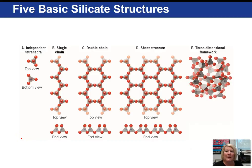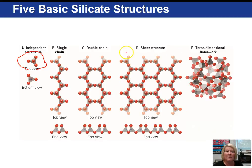Here we're looking at a variety of ways the silicon oxygen tetrahedron can arrange itself. They can be independent tetrahedra — with a negative four charge, positive ions like iron, magnesium, calcium, and sodium will attach, and you give the mineral a name according to what cation has attached. Silicon oxygen tetrahedra can also be linked in single chains, double chains, sheets, or a three-dimensional complex framework.